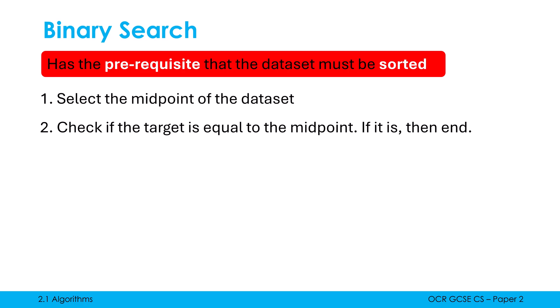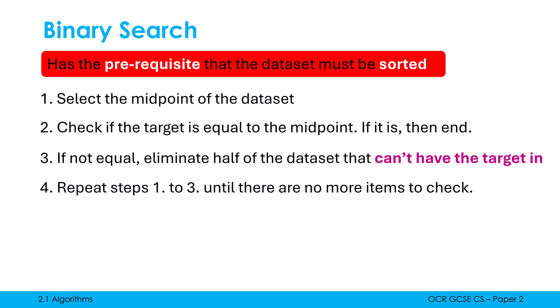However, unless we get very lucky and it happens straight away, we are in all likelihood not going to have our target equal to our first midpoint. So what we do, which relies on us having an ordered data set, is we can eliminate half of the data set that can't have our target item in it. We repeat steps one to three until we end up with no more items to check. If we've run out of items to check, therefore our target is not in our data set.